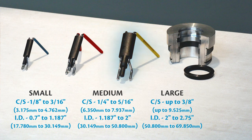The large installation tool is suited for cross sections up to 3/8ths of an inch and an ID of 2 inches to 2.75 inches.